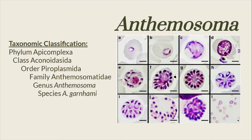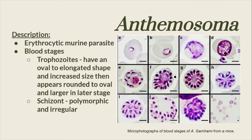The next species is Antimosoma garnhami. This species is known as an erythrocytic murine parasite and is only known to occur in two locations, Ethiopia and Namibia, and it undergoes different blood stages.